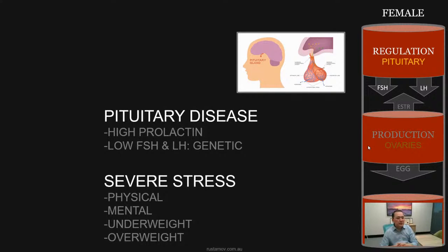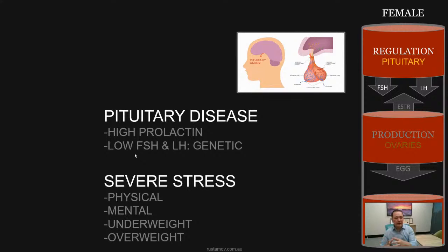Problems of regulation — pituitary dysfunction — are linked to two major causes: one is pituitary disease, and the second is severe chronic stress. The most common pituitary disease involves high prolactin levels and low FSH and LH levels. Short-term minor stress doesn't cause significant fertility problems, but chronic long-term stress — such as physical stress, mental stress, being underweight or overweight — can cause problems with reproduction.